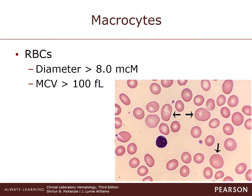Macrocytes are larger than normal erythrocytes with a diameter of greater than 8 microns and are present when the MCV is over 100. The cell usually contains an adequate amount of hemoglobin, resulting in a normal MCHC and a normal to increased MCH. Young erythrocytes are normally larger than mature erythrocytes, but within a day of entering the bloodstream, the spleen grooms them to a normal size. When the reticulocyte count is increased, the MCV can also be increased.